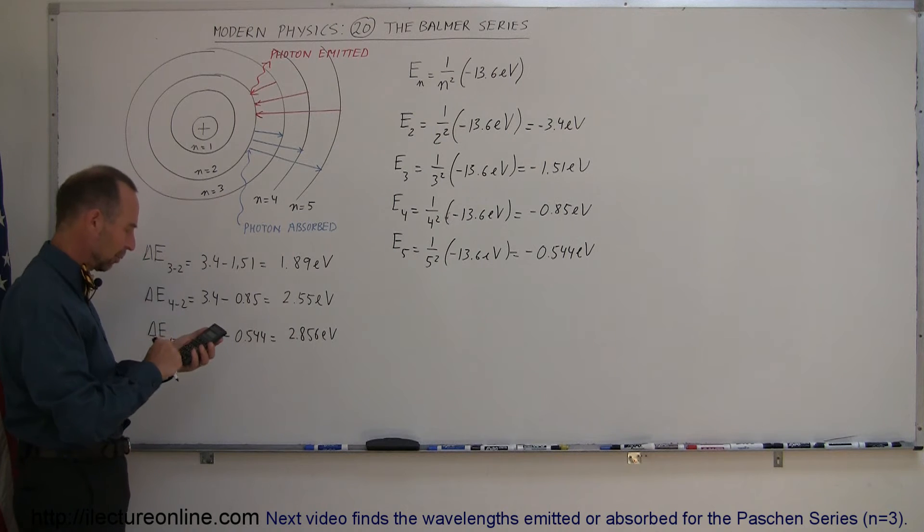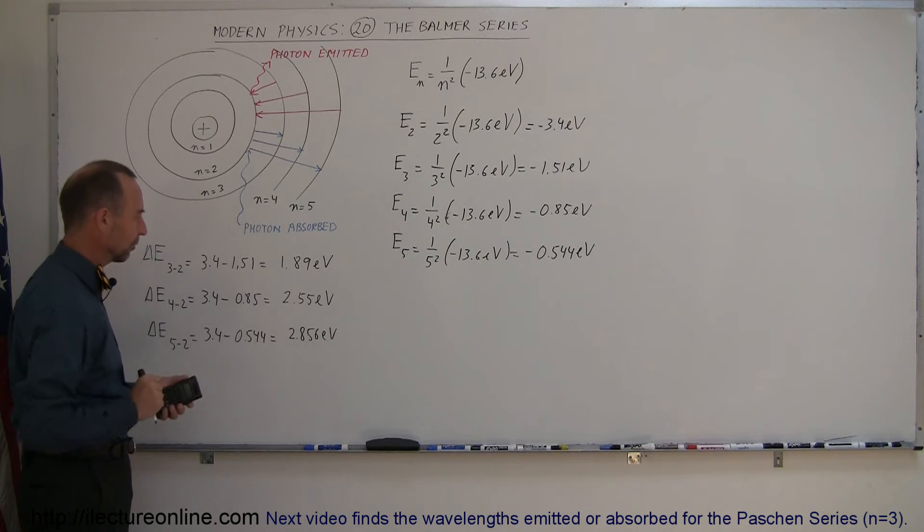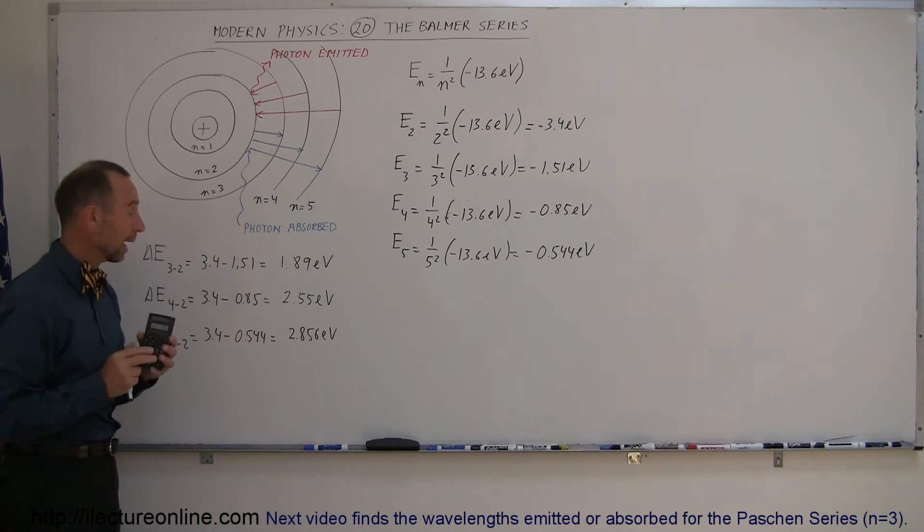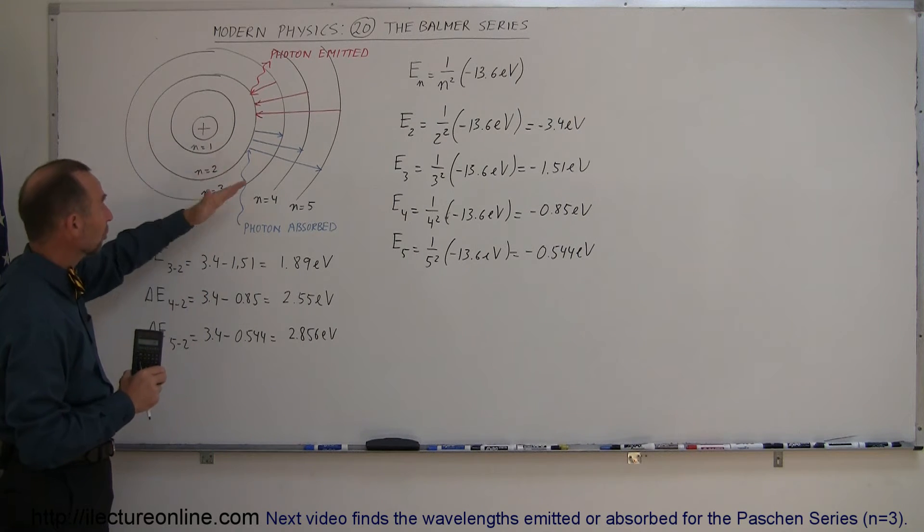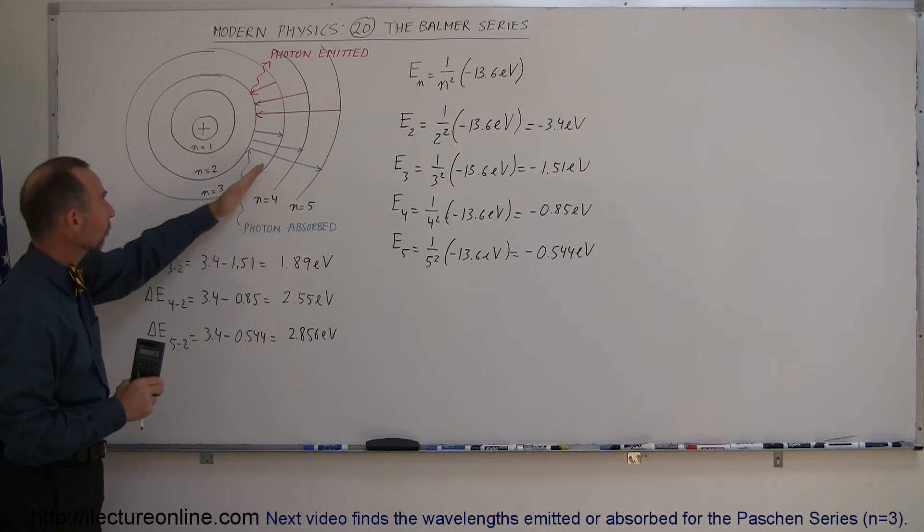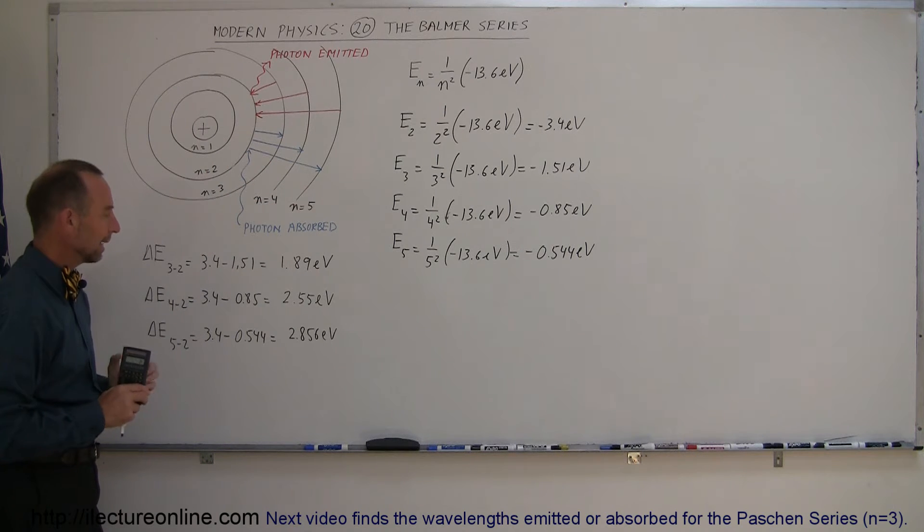And then the energy level from 5 to 2 is equal to 3.4 minus 0.544, which would be equal to 2.856 electron volts. So here we have the difference in the energy between 3 and 2, 4 and 2, and 5 and 2 in the hydrogen atom.